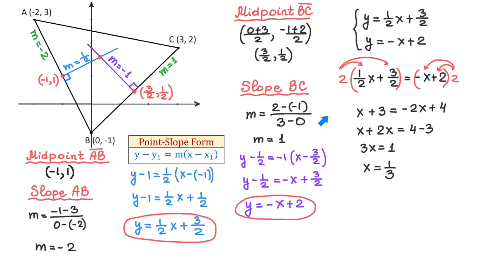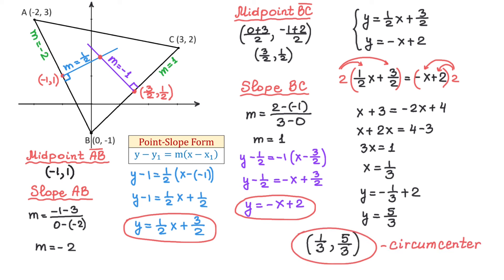Now let's substitute x = 1/3 into one of the equations to find the y-coordinate of the circumcenter. Using the second equation: y = −(1/3) + 2 = 5/3. Therefore, the circumcenter has the coordinates (1/3, 5/3). I hope you liked this video, thank you for watching.